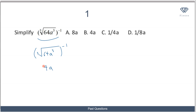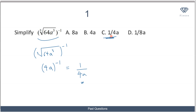So I'm left with 4a to the power of minus one. From the laws of indices, we recall that a negative exponent means we find the reciprocal. So this equals 1 over 4a. The answer to this question is C: 1 over 4a.